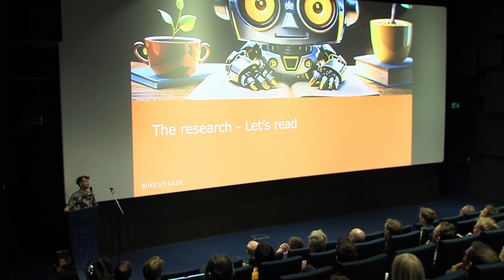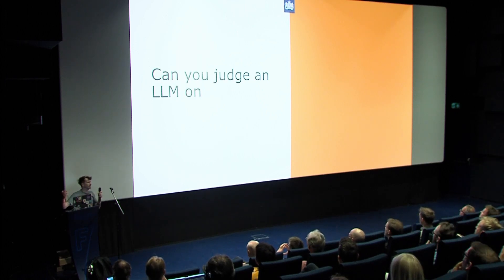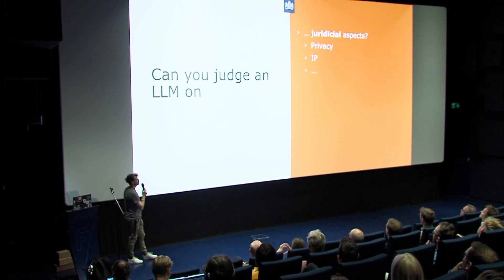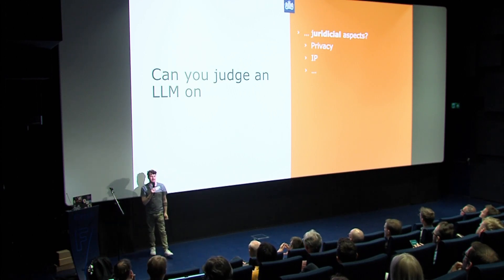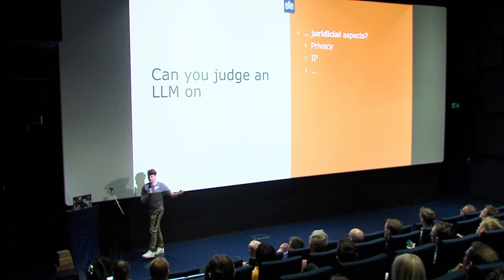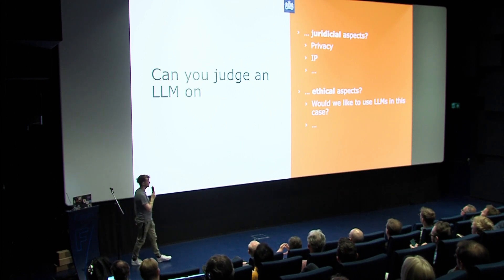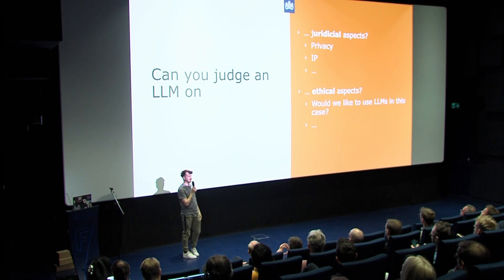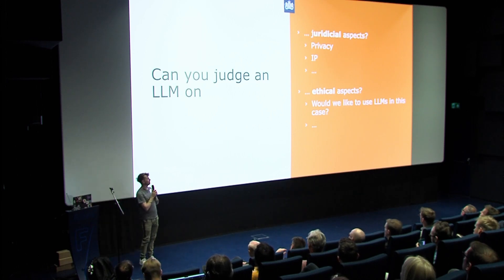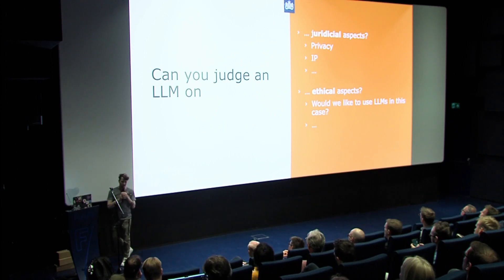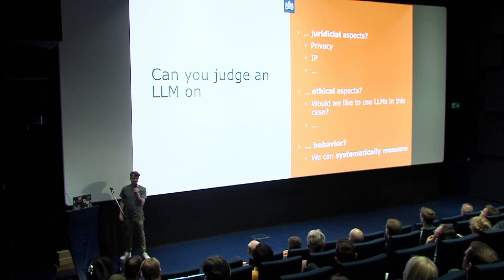So let's do some research first. How are we going to test for bias on these models? The question is: on what can we judge an LLM? Can we judge them on judicial aspects like privacy or IP? Well, we can only look at maybe the documentation from the company itself. But it's not something we can actually get from the LLM itself. Or ethical aspects — like would we actually use an LLM in this case if you maybe can use a simple decision rule? But what we can actually judge is measuring behavior from the LLMs, and we want to test that systematically.